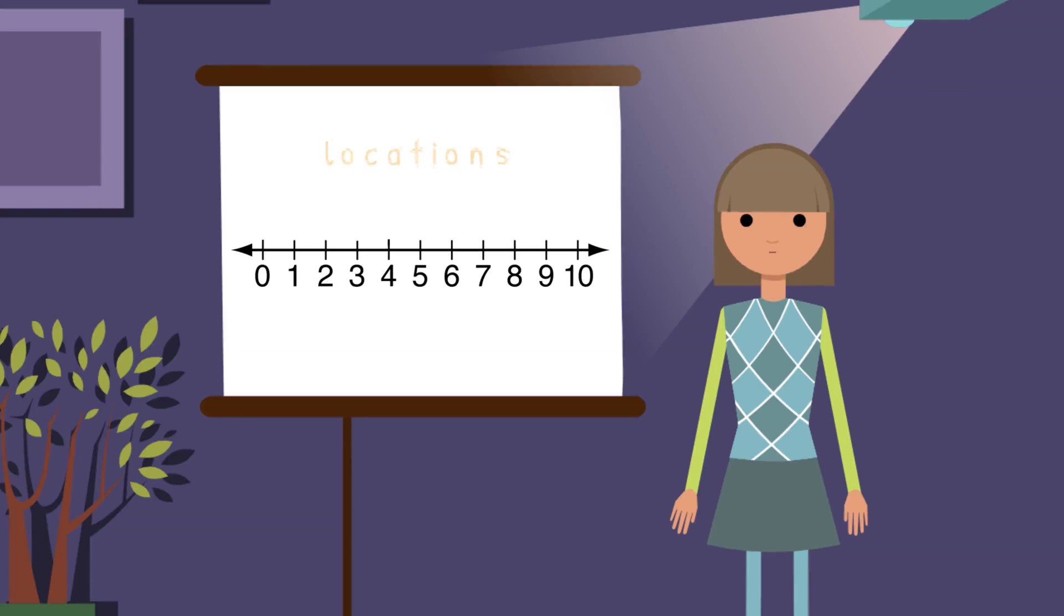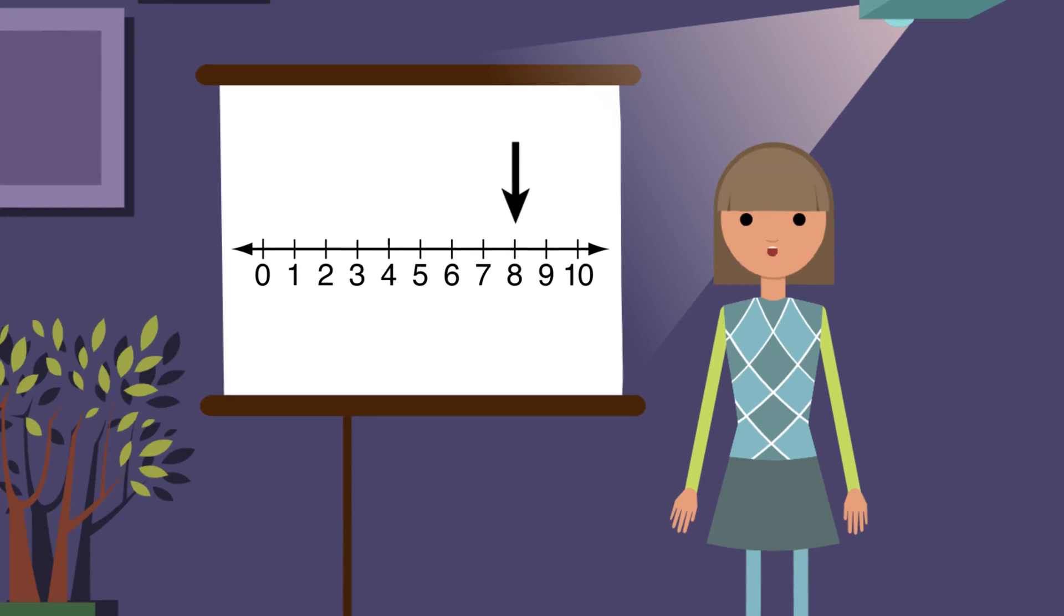Now let's take a closer look at locations on the number line. Find the number 7. We can see 8 comes after 7 on the number line. So 8 is larger than 7. This number line counts up by 1's. So 8 is 1 more than 7.